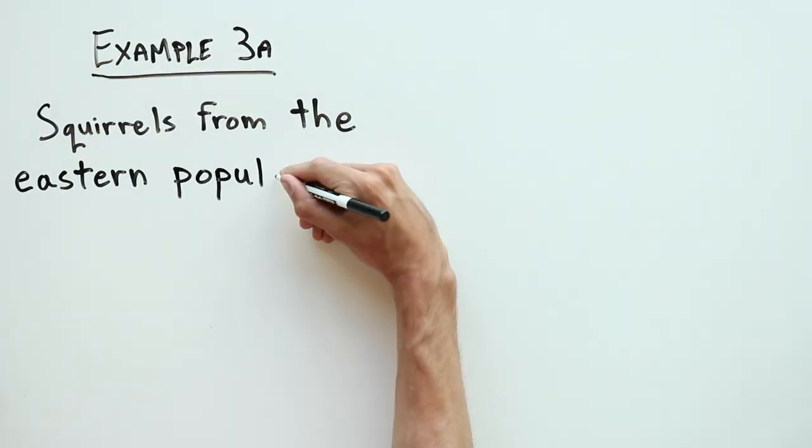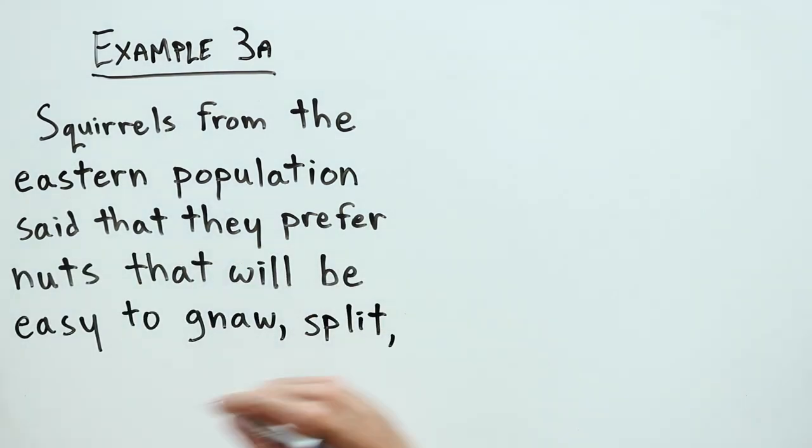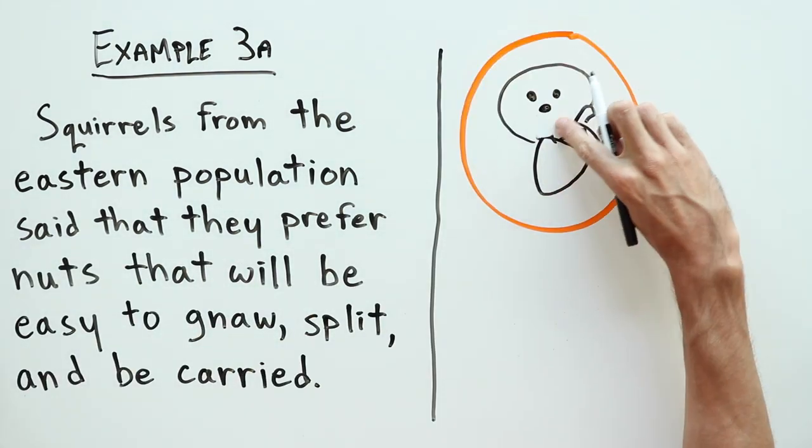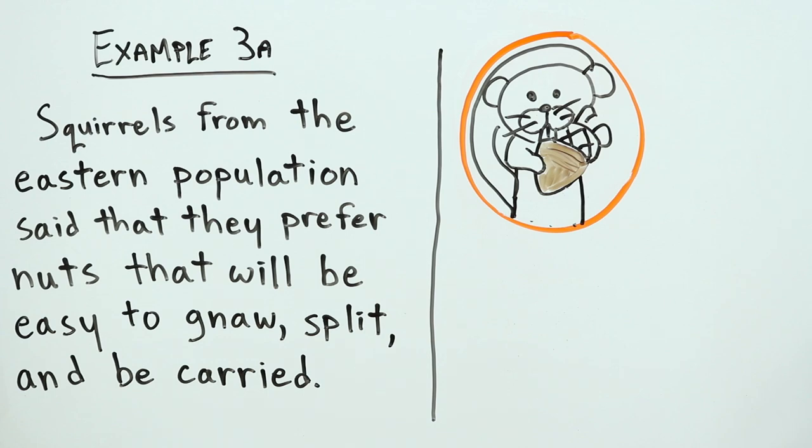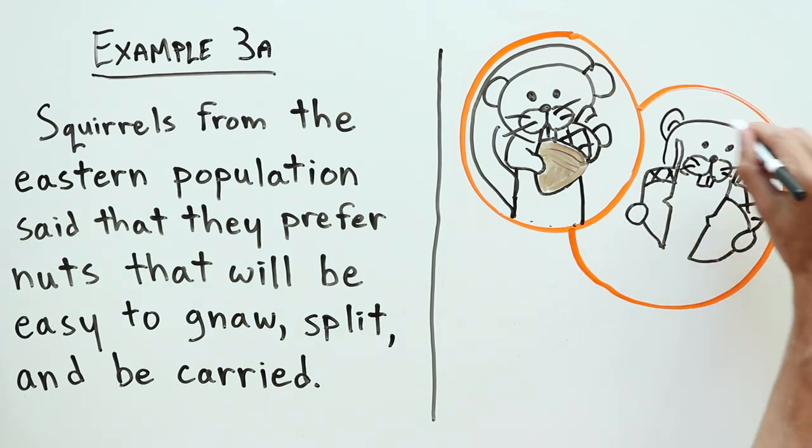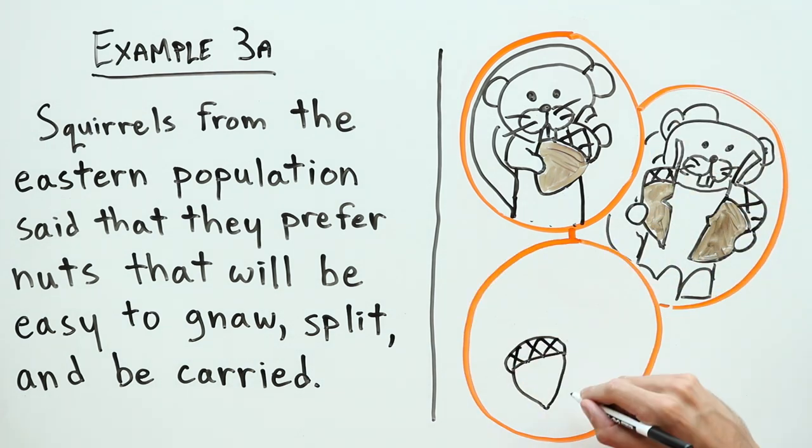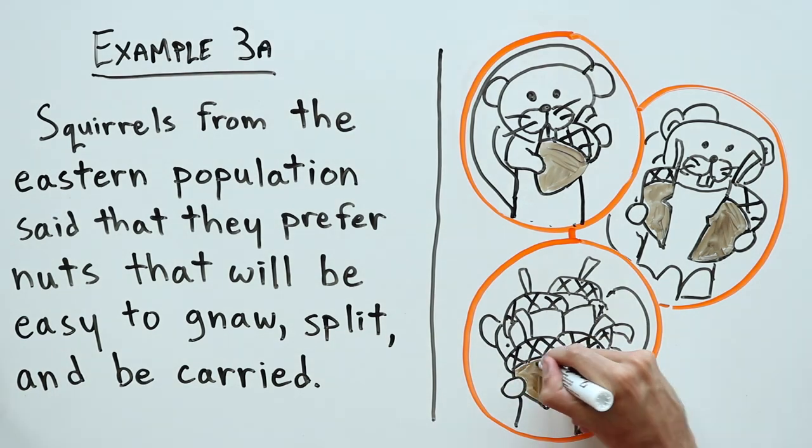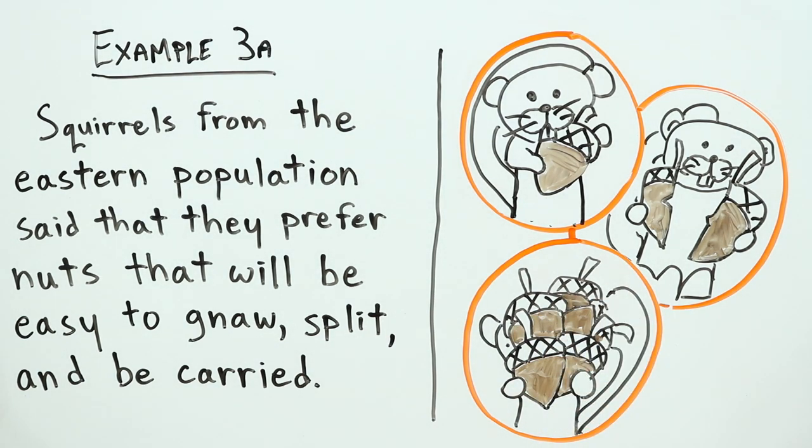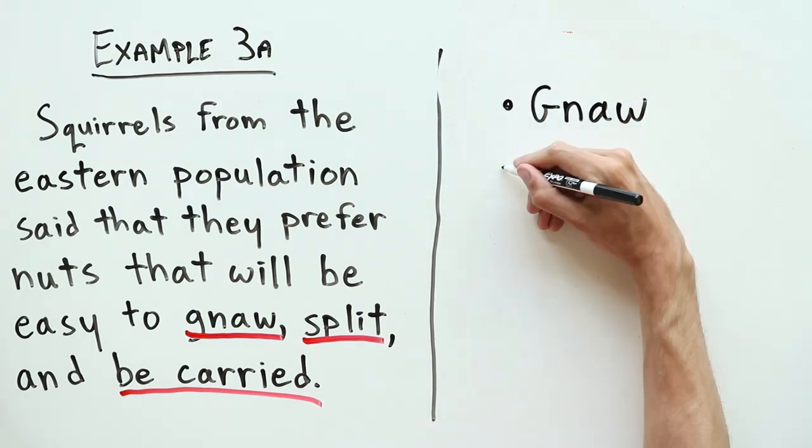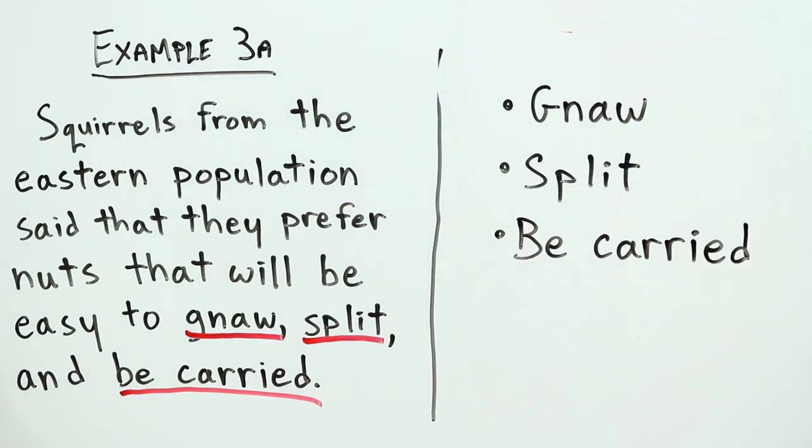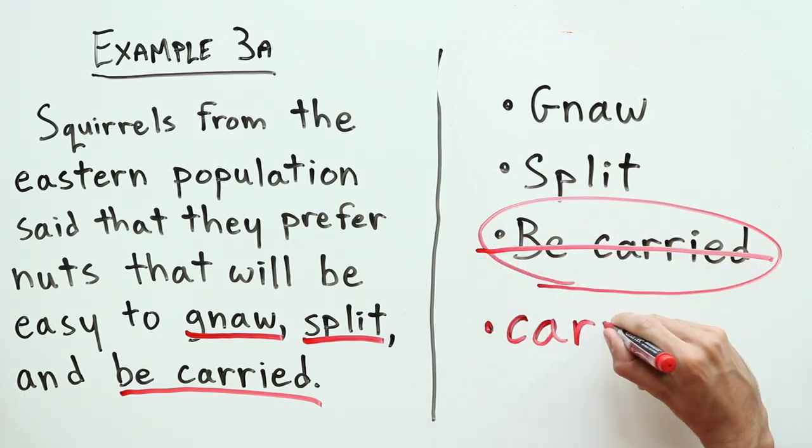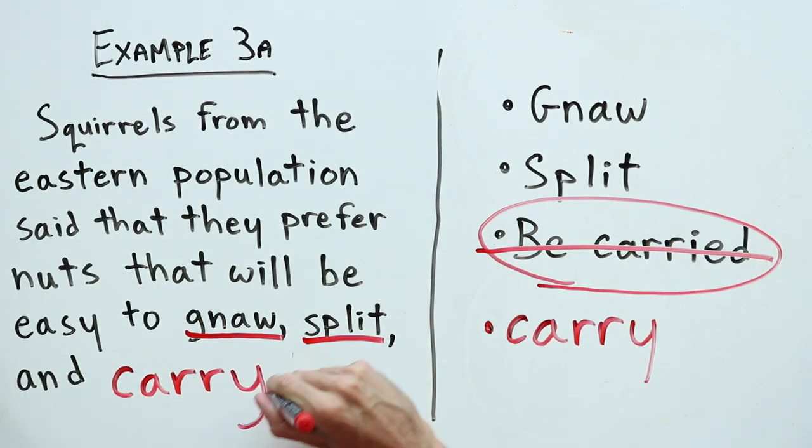In this first example, she wrote, Squirrels from the eastern population said they prefer nuts that will be easy to gnaw, split, and be carried. What do you think? Is this in parallel form? Listen to the linked words and list them in a column if you need to. No that's not right, but this sounds and looks much better.